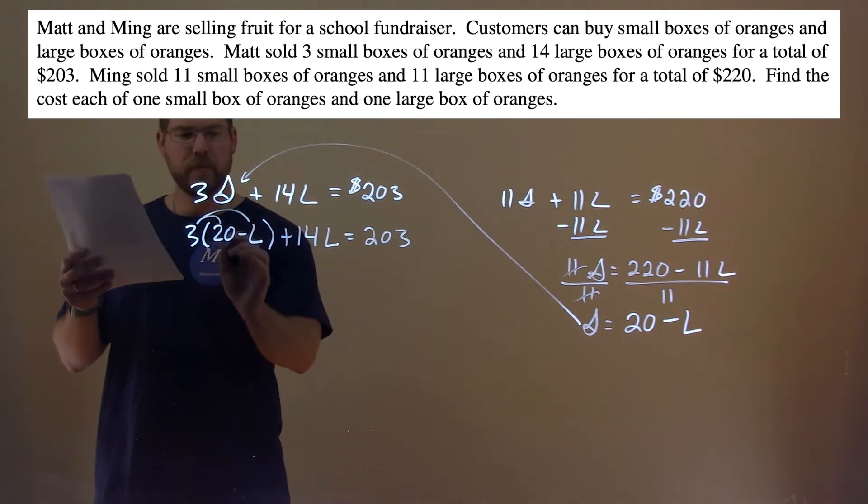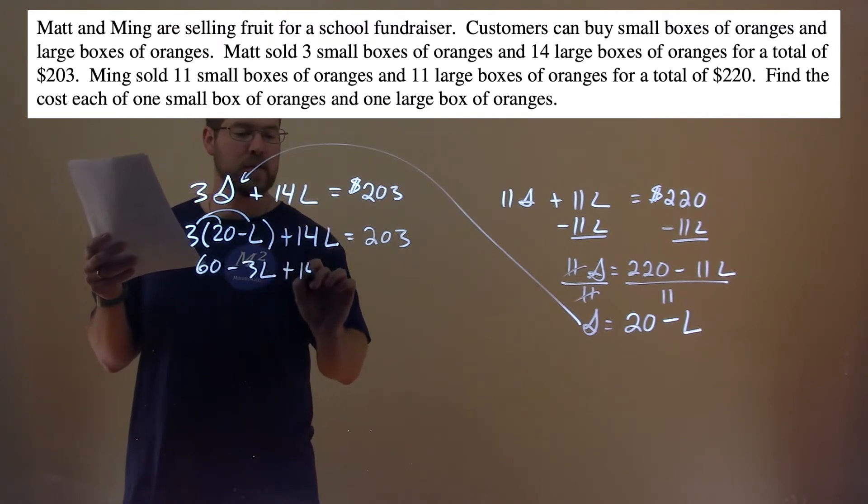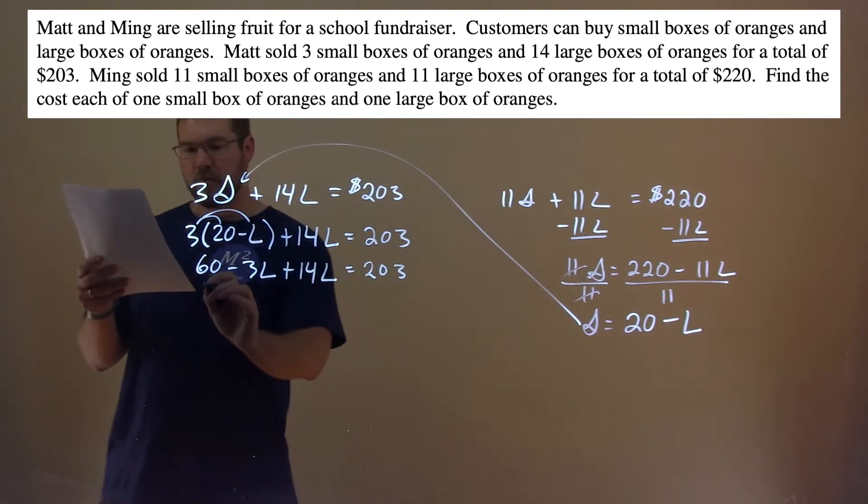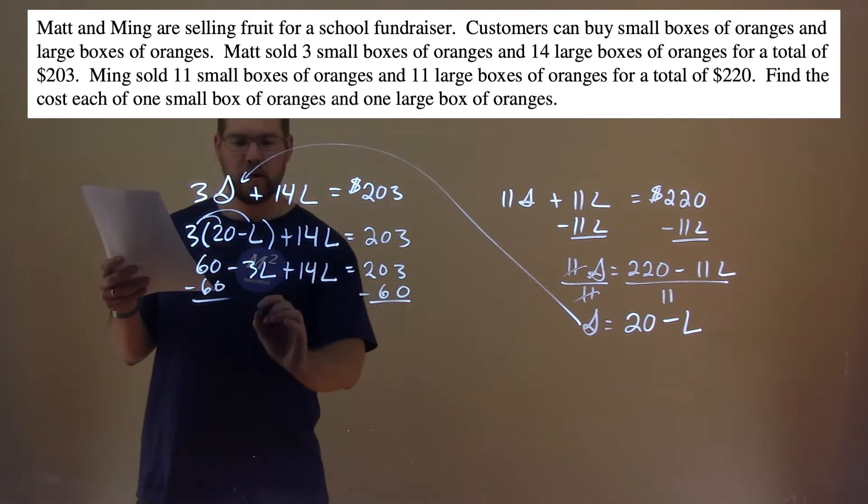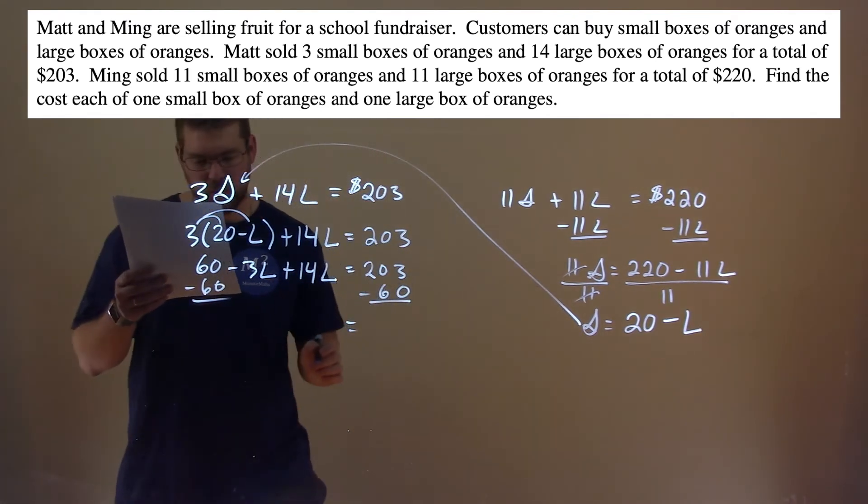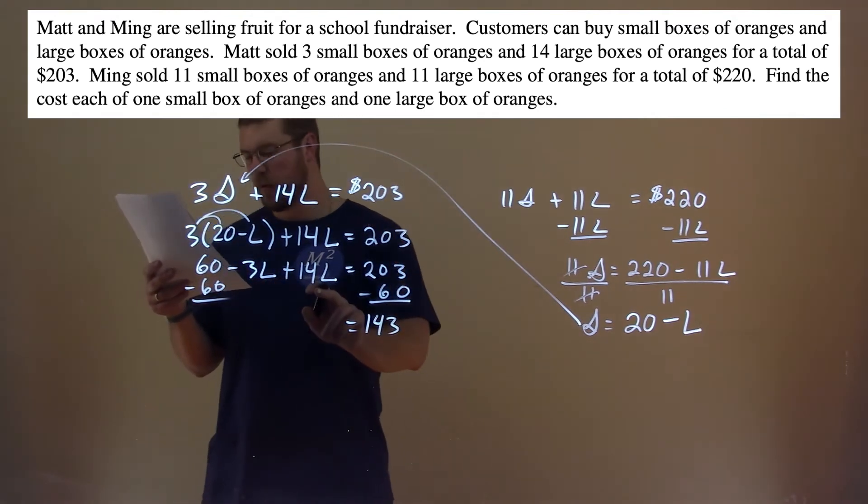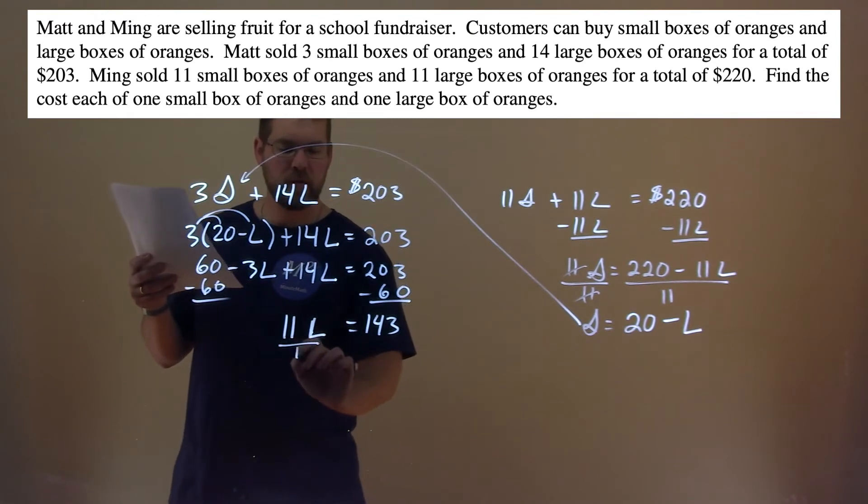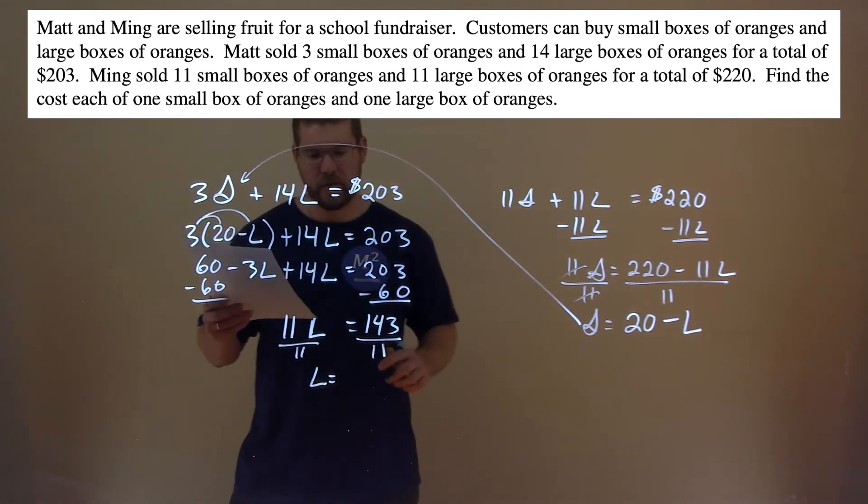Distribute the 3 to both parts. 3 times 20 is 60, 3 times minus L is minus 3L plus 14L equals 203. Subtract 60 to both sides. We're left with, on the right side, 203 minus 60 is 143, and negative 3L plus 14L is 11L. Again, divide both sides by 11, and L is by itself. 143 divided by 11 is 13.